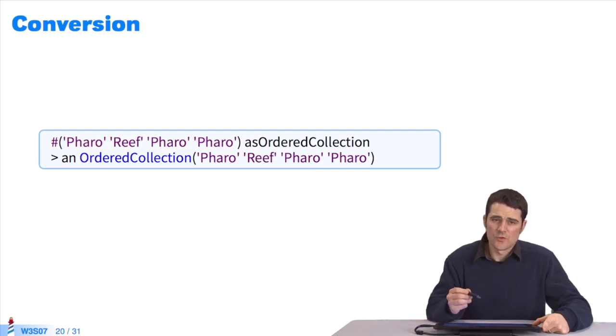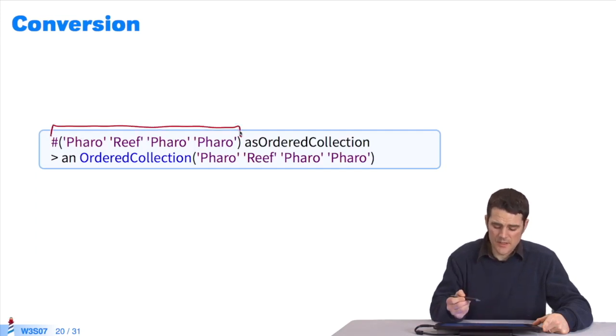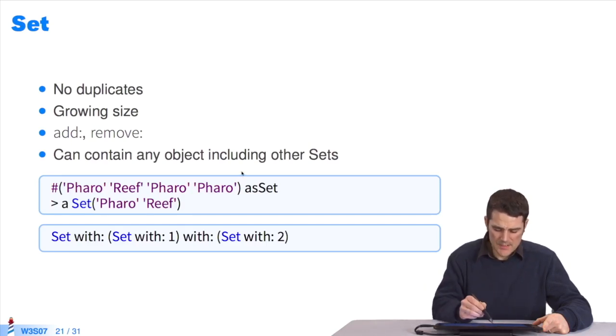I have conversion methods between a collection type and another. Here, I'm using a literal collection, which is an array. The message AS:ORDEREDCOLLECTION will turn this array into an ordered collection. Sets are a type of collection without duplicates. They can be extended. They grow with every added element. I can use a literal collection I turn into a set. I end up with a set without any duplicates. I could also choose the dynamic version over the literal one. SET:WITH:WITH: creates a set and fills it with two elements. That's two sets each time.